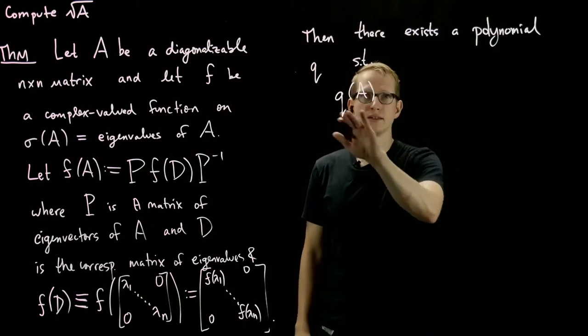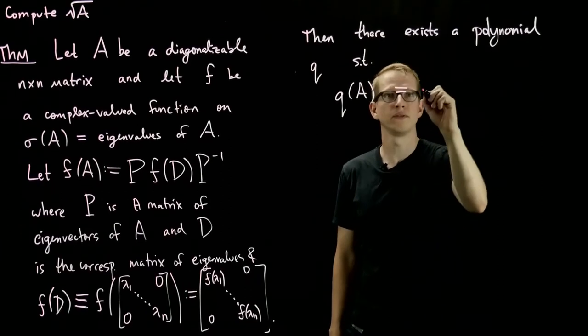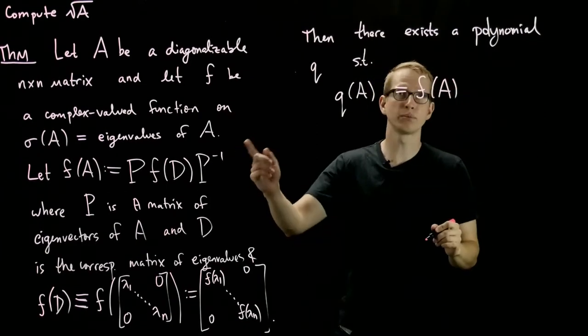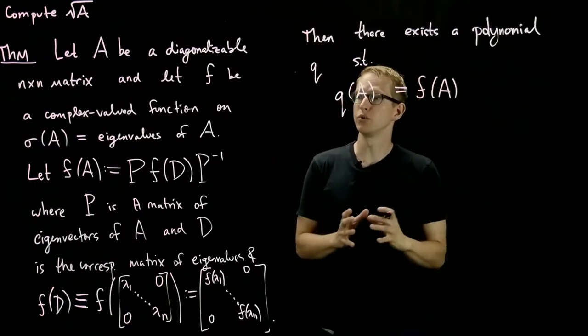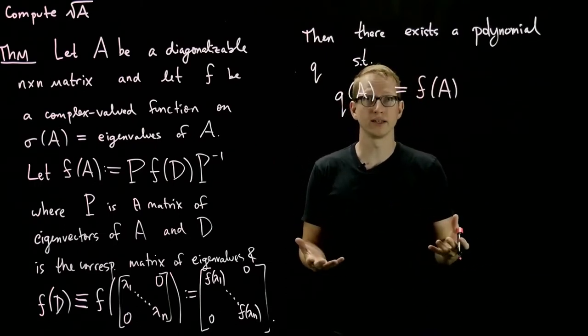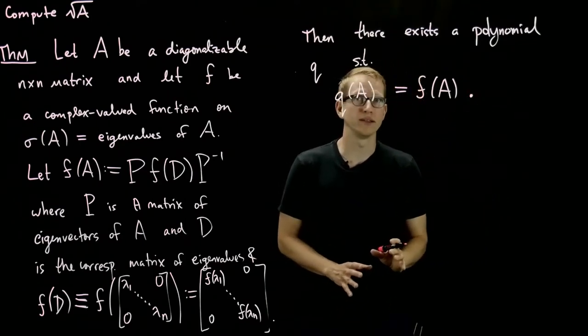So this is some polynomial in A, but it turns out to equal F(A) as defined previously by this method of breaking a matrix up into its eigenvalues and eigenvectors. So that's what the statement of this theorem is.